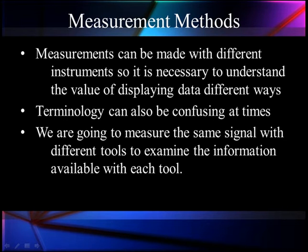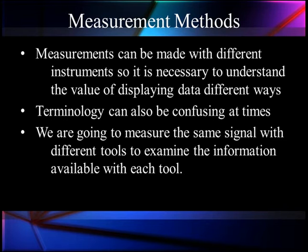We've taken you into some details and showed you some of the advanced instruments we use to solve a specific problem — in this case to get the general idea and then to solve a P0-171. What we're going to do now is talk about measurements. Measurements can be made with different instruments or tools, so it is necessary for you to understand the value of displaying data in different ways. Sometimes terminology can get confusing, and we'll try to cover that. We're going to measure the same signal occasionally with different tools to examine the information available to each tool. Why do we want to change from a basic voltmeter to a lab scope? What additional information is available if we make this change? So this is the concept of this section. We're going to cover a wide variety of things and then go back and look at specific things later on.